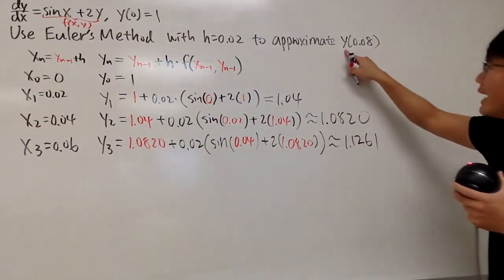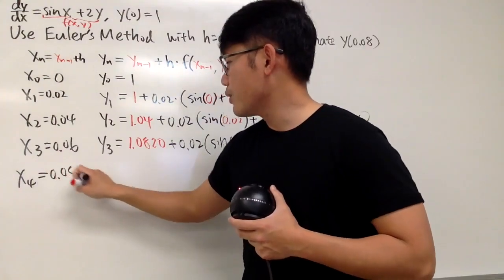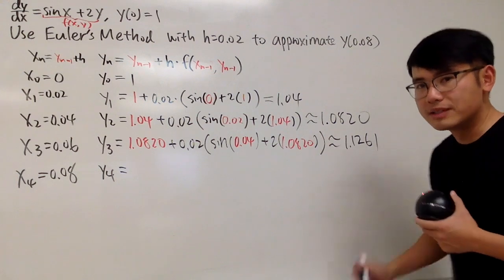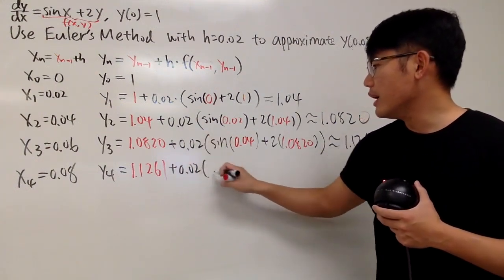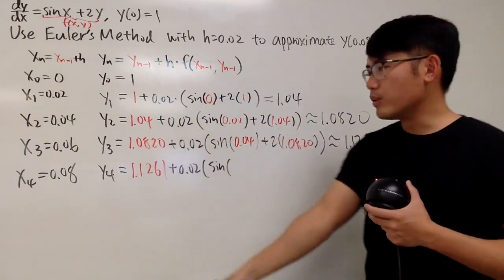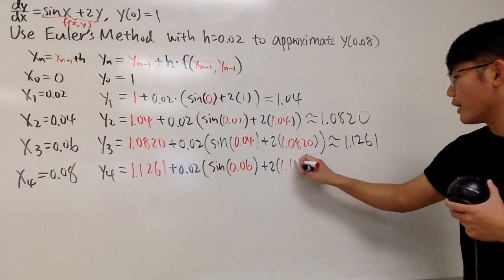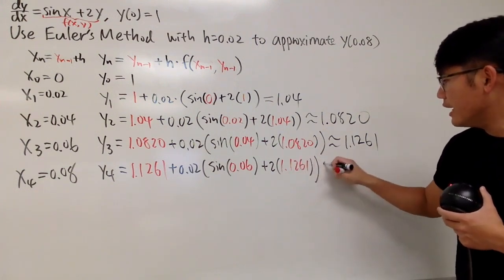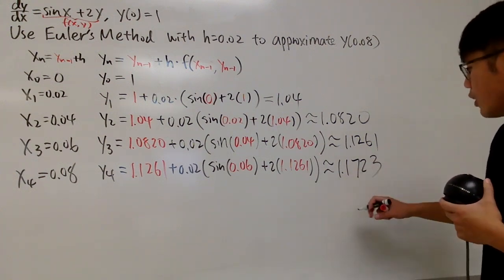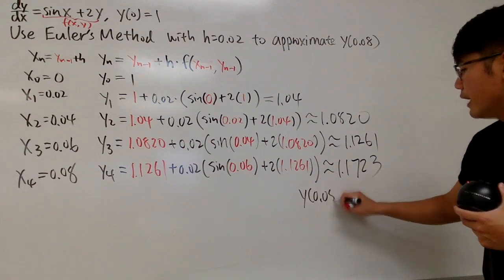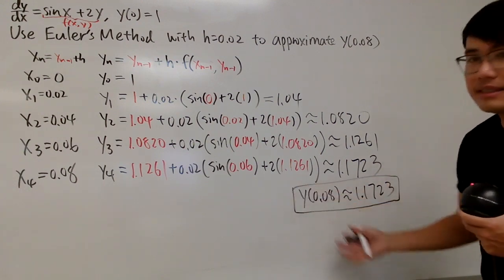One more, because we want to end up at y of 0.08. So the x value for this one is going to be precisely 0.08. And then y4, again, put down the previous y value, which is 1.1261. And then again, you add the h, which is 0.02, and then times sine of the previous x value, 0.06. And then you add 2 times the previous y value, 1.1261. And in the end, you will get approximately 1.1723. So based on this, we are saying y of 0.08 is approximately 1.1723. So this will be the approximation based on Euler's method.